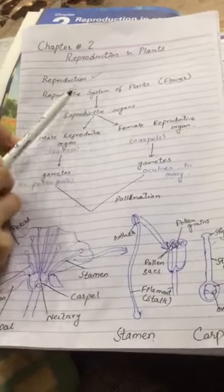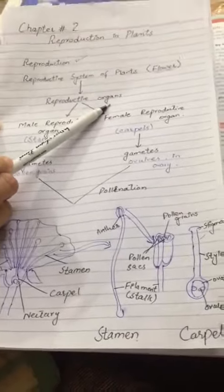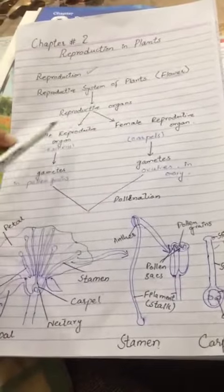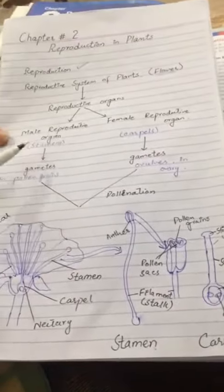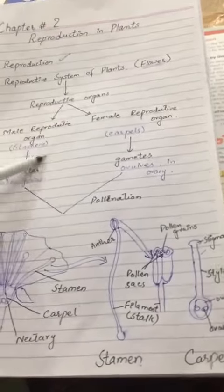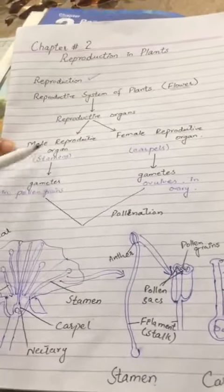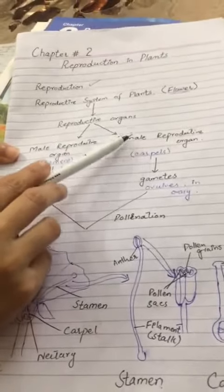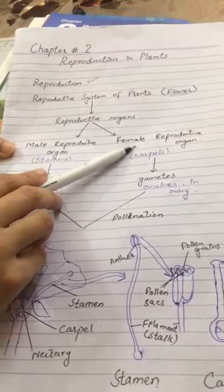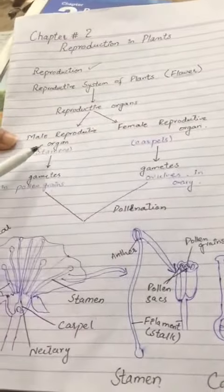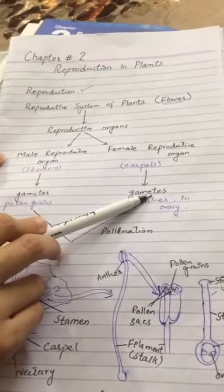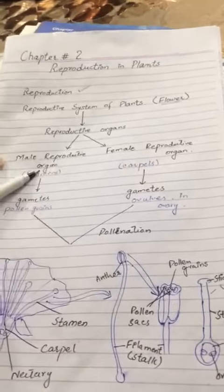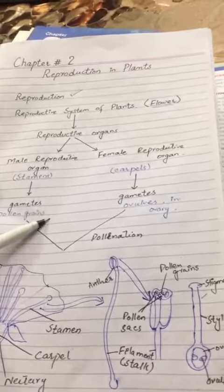There are two types of reproductive organs: one is the male reproductive organ and the other is the female reproductive organ. The male reproductive part produces pollen grains, and the female reproductive part is a separate organ.